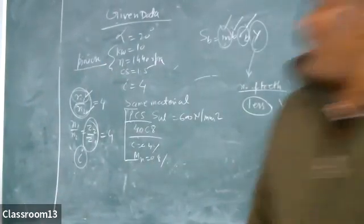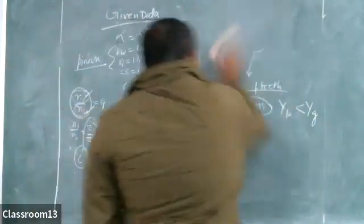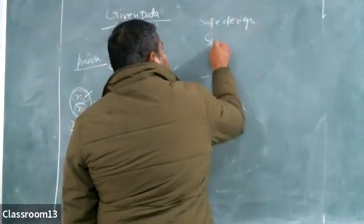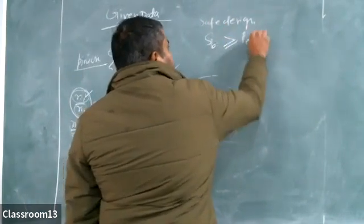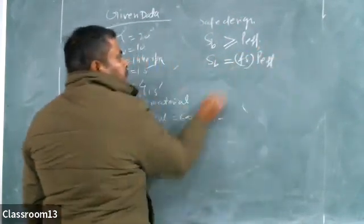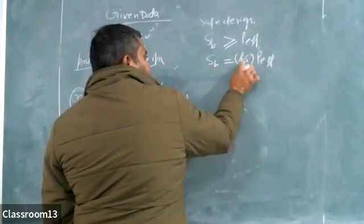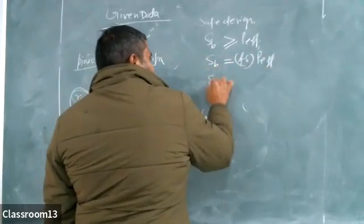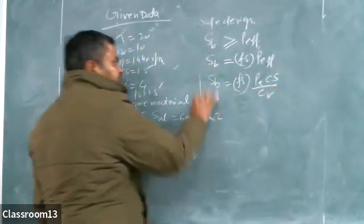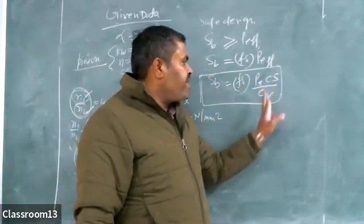The factor of safety can be taken as 1.5. For the safe design condition: beam strength Sb must be greater than or equal to Peff. So Sb = factor of safety × Peff = Fs × Pt × Cs / Cv. Beam strength is the ratio of Fs times the effective force.